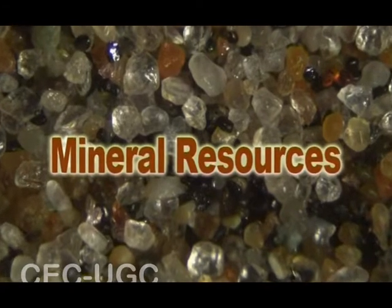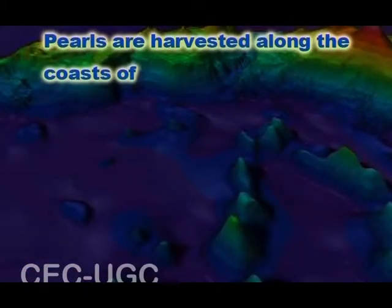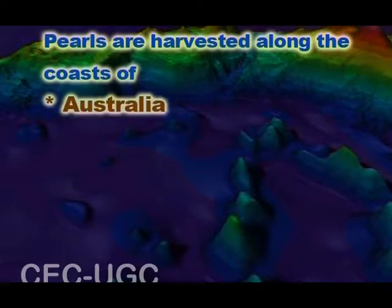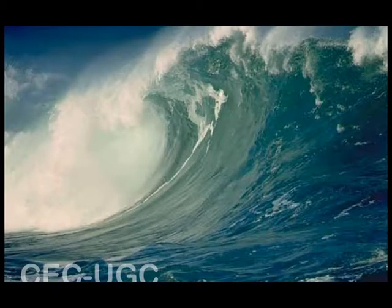The mineral resources of the Pacific Ocean are yet another important feature. The exploitation of the Pacific's mineral wealth is hampered by the ocean's great depths. In shallow waters of the continental shelves off the coasts of Australia and New Zealand, petroleum and natural gas are extracted. Pearls are harvested along the coasts of Australia, Japan, Papua New Guinea, Nicaragua, Panama, and the Philippines. Deposits near undersea hot springs contain copper, iron, and zinc.